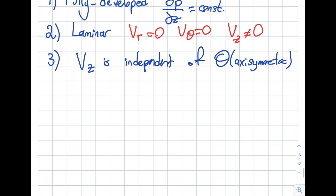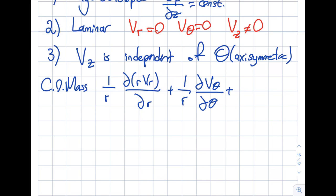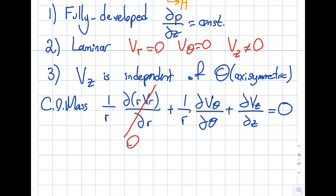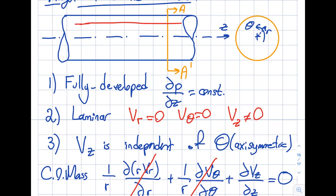Now I will start, as I did for Poiseuille flow, with the conservation of mass. That gives: (1/r)(d/dr)(r·V_r) + (1/r)(dV_theta/dtheta) + dV_z/dz = 0. Since V_R is zero, that term vanishes. Since V_theta is zero, that term vanishes. The only thing left is dV_z/dz = 0, which means the velocity doesn't change in the Z direction — just as velocity didn't change in the X direction for parallel plates.